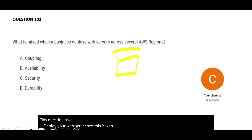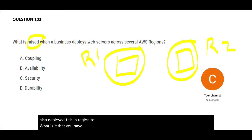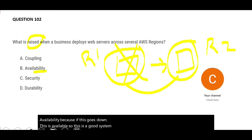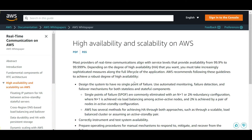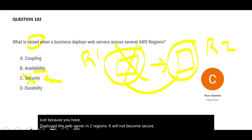This question asks: if you deploy your web server in Region 1 and also deploy it in Region 2, what is it that you have raised? The answer is availability — if one region goes down, the other is still available. Deploying in two regions gives you high availability, which is very important in the cloud world. It does not make the server more secure or more durable.